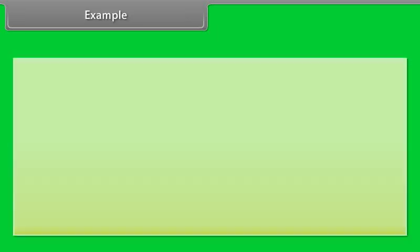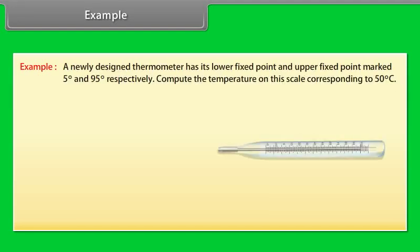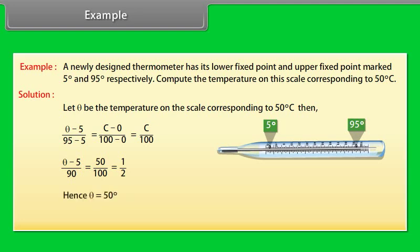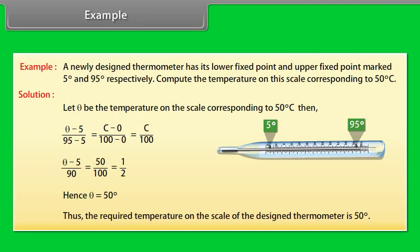Example: A newly designed thermometer has its lower fixed point and upper fixed point marked 5 degrees and 95 degrees respectively. Compute the temperature on this scale corresponding to 50 degrees Celsius. Let theta be the temperature on the scale. Then theta minus 5 upon 95 minus 5 is equal to C upon 100. Simplifying: theta minus 5 upon 90 is equal to 50 upon 100. Hence theta is equal to 50 degrees. The required temperature on the scale of the designed thermometer is 50 degrees.